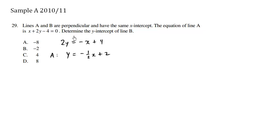Now it says here that A and B are perpendicular. So the slope here for line A is negative 1 half. Perpendicular means that the slope of B is going to be the negative reciprocal. So the sign is going to flip.